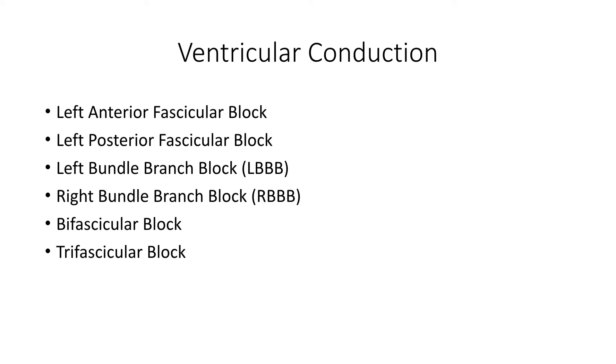Ventricular conduction abnormalities are a common subject for testing because there are classic patterns to recognize on the ECG, and they have prognostic implications for patients with underlying or acquired heart disease. Here's a list of diagnoses we're going to cover in this section: left fascicular hemiblocks like left anterior fascicular block and left posterior fascicular block, left and right bundle branch block, and finally, combinations of the above in the bi- and trifascicular blocks.